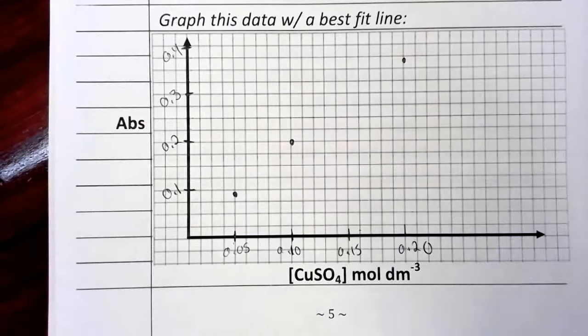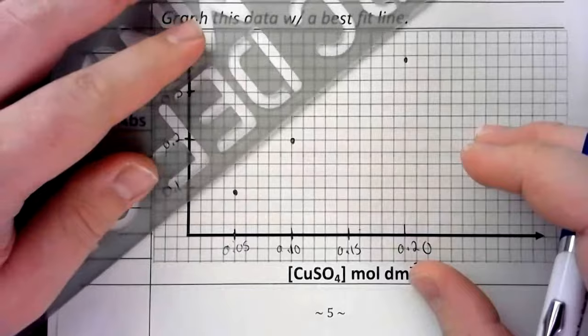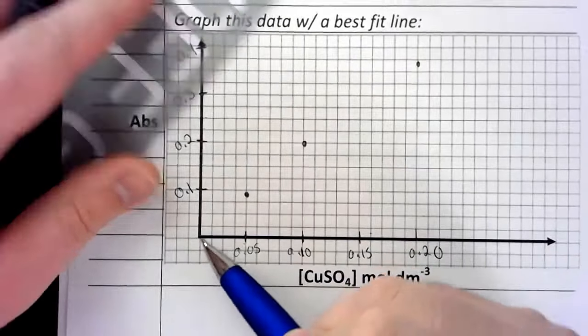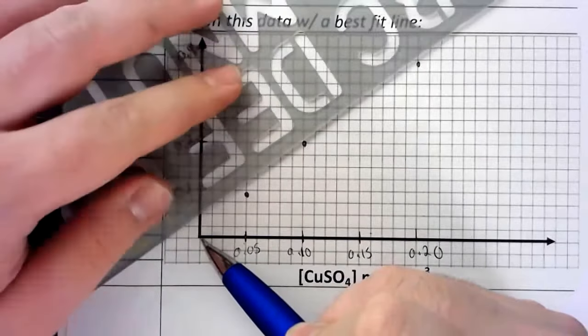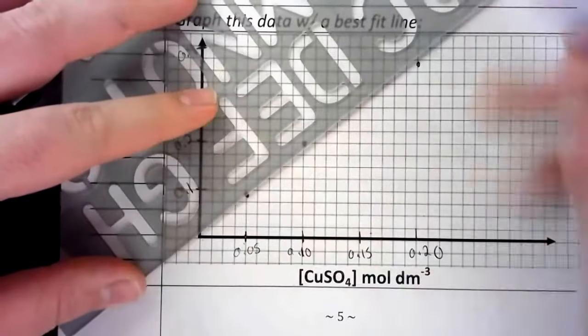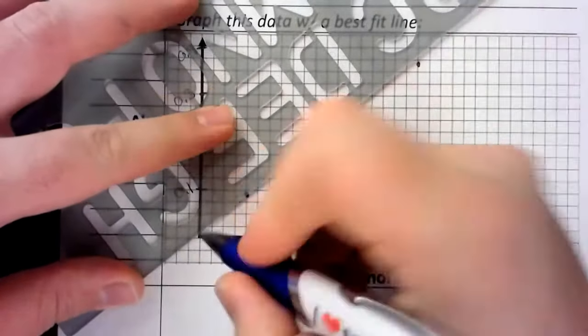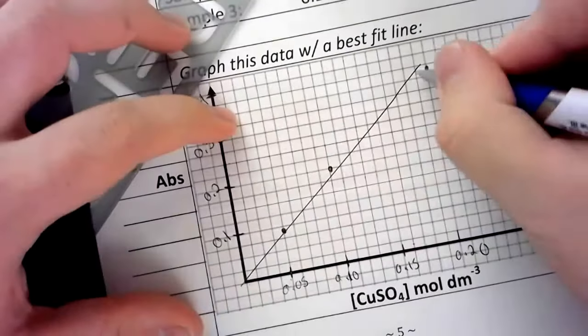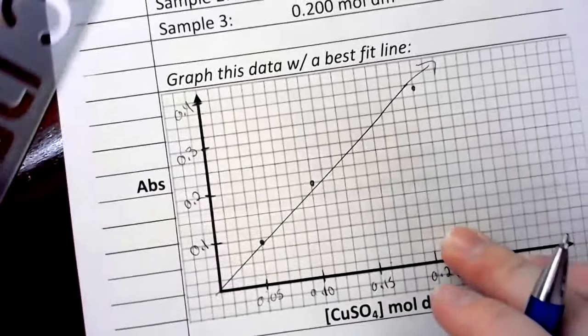And then I can sketch what's called a best fit line. Something to remember is that if the concentration is 0, so should the absorbance. So, you can kind of treat the origin as if it were a point on your graph here. And I'm going to draw a best fit line in such a way that I'm encompassing as many of these points as possible.